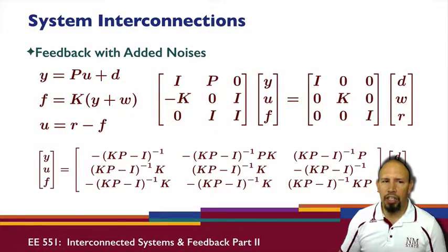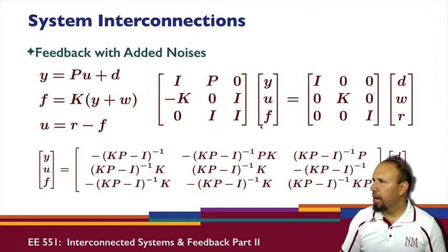In the interconnections, I have these different outputs and the various inputs, and so these are how the inputs relate to the outputs. So I have three inputs, three outputs. That gives me nine matrices. So these are nine transfer functions that I have.